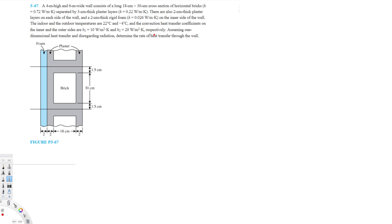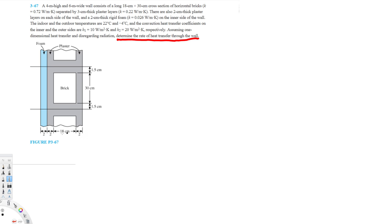Assuming one-dimensional heat transfer and disregarding radiation, we need to determine the rate of heat transfer through the wall. To do this, we will calculate the thermal resistance of each layer and then calculate the heat transfer rate. Let's draw a diagram of the resistance network.